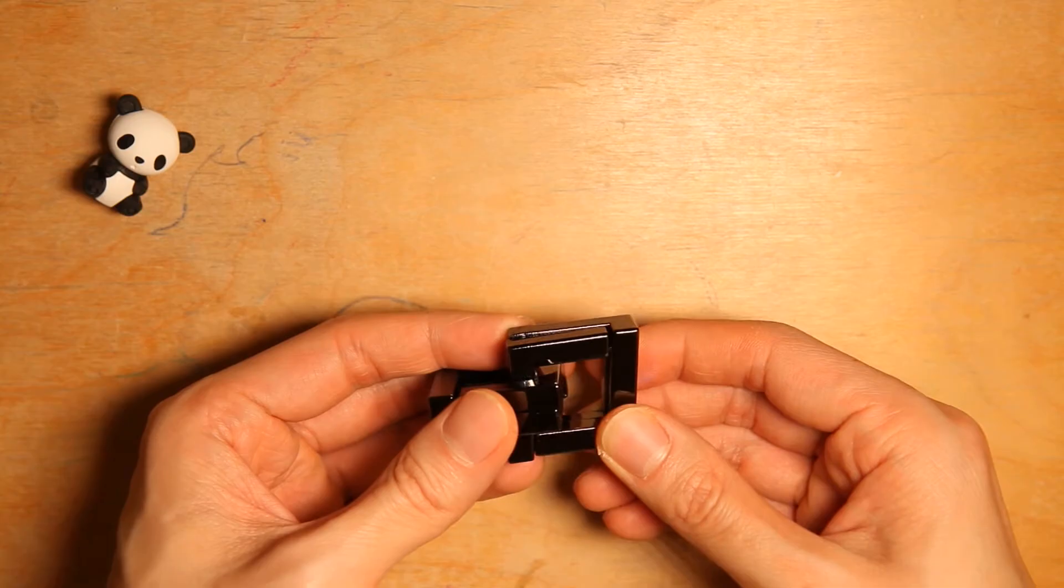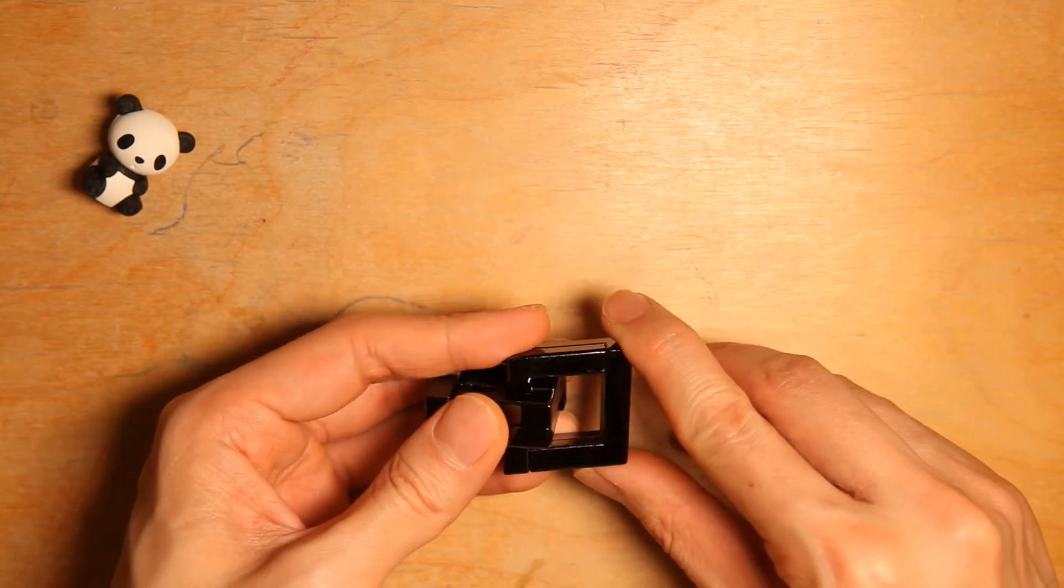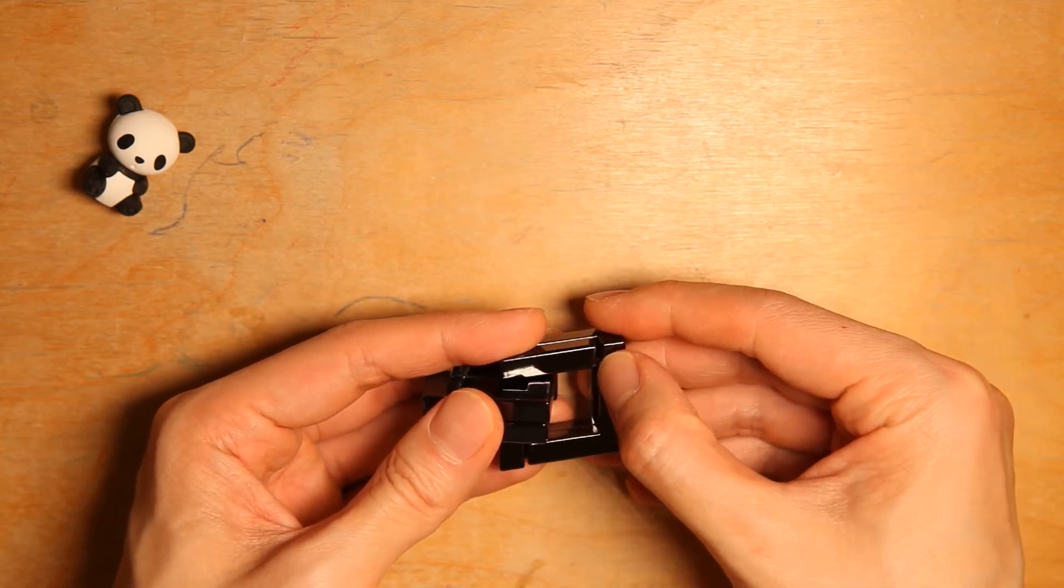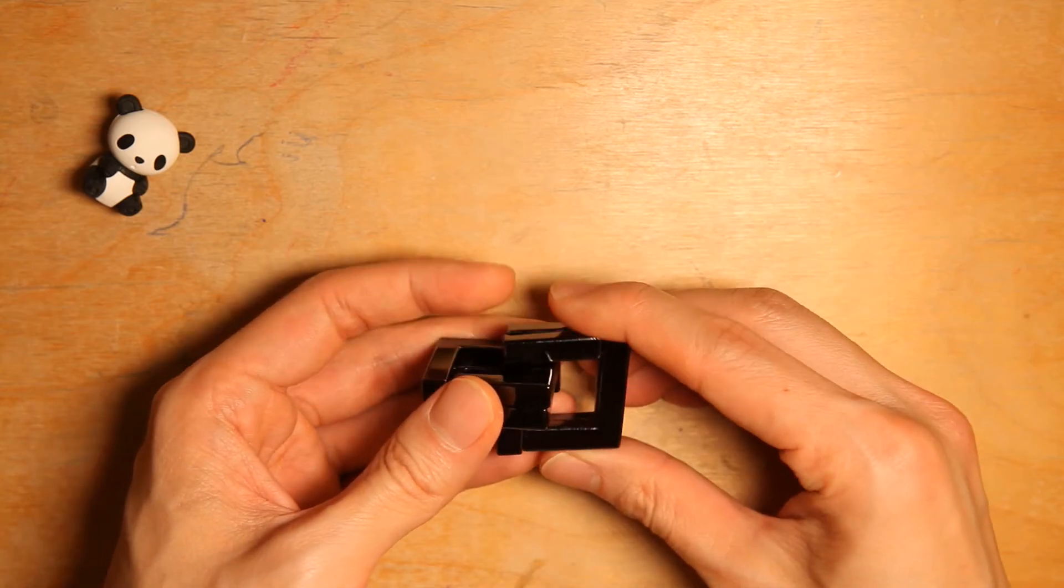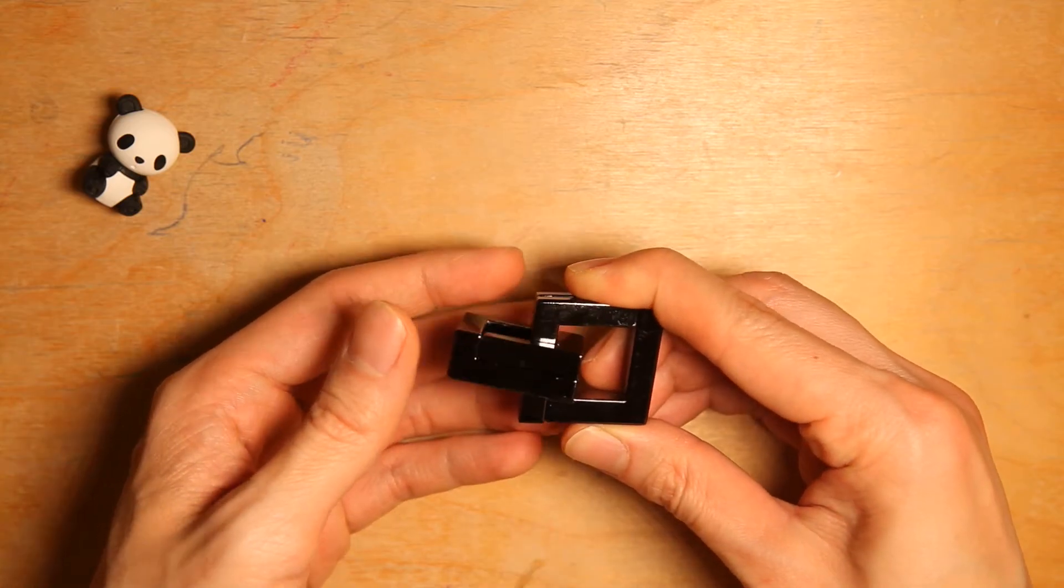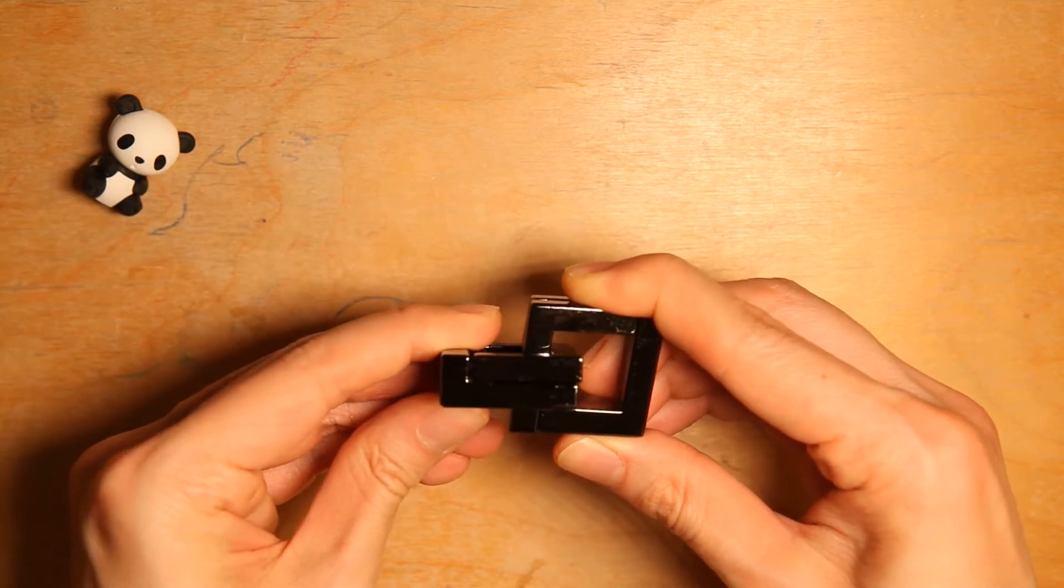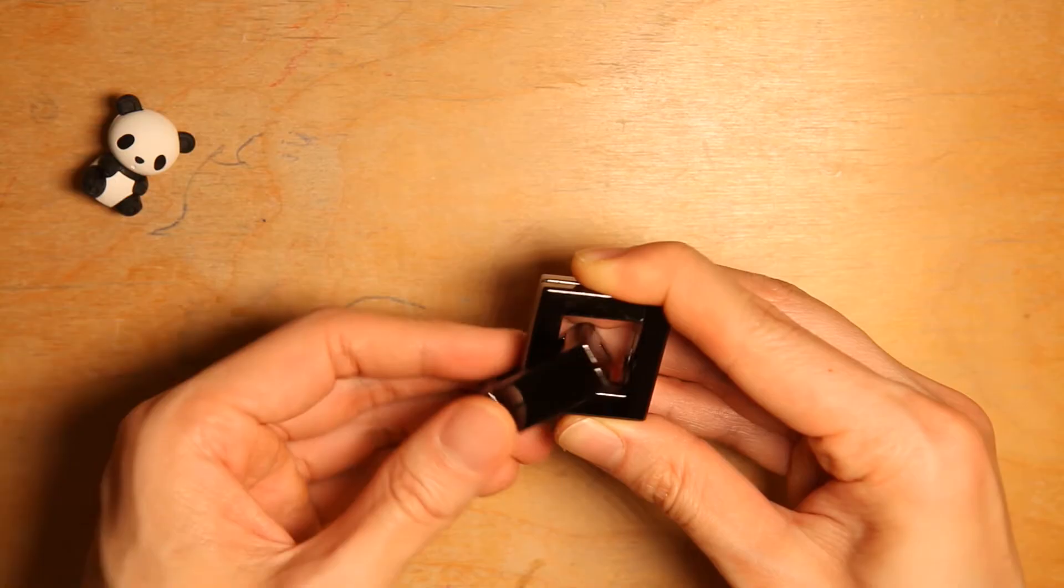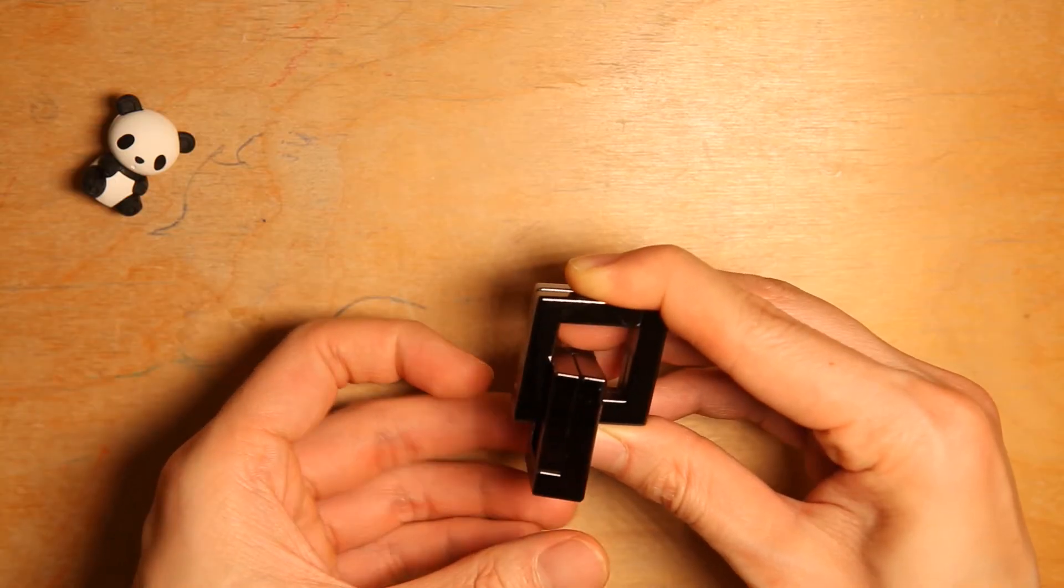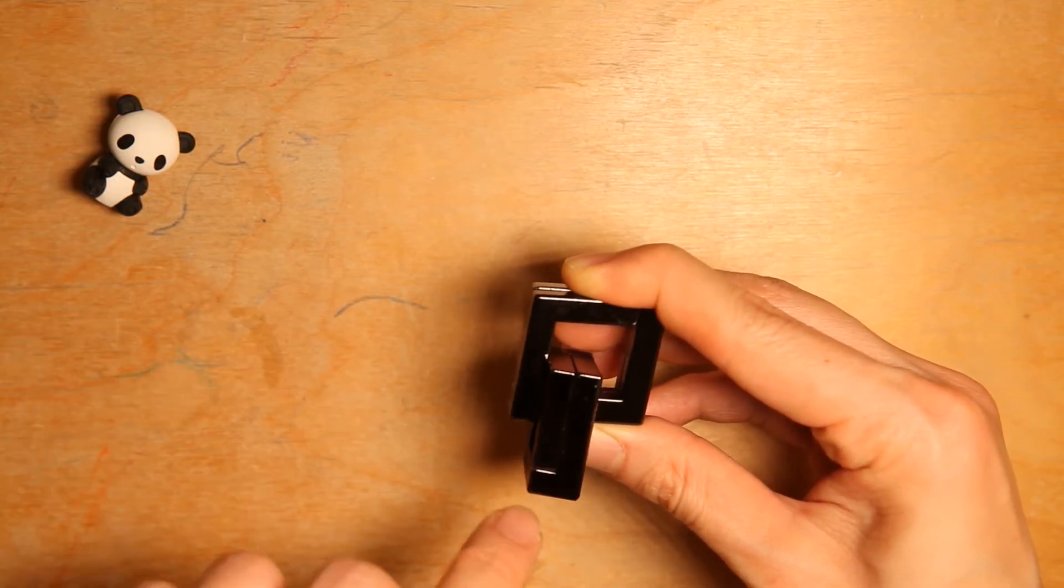What you have to do is put the Hanayama pair with the gaps here and here so they are basically vertical. And for the Quartet pair, the opening will be here. So if you place it like this, it should be horizontal.